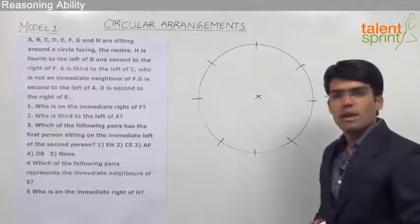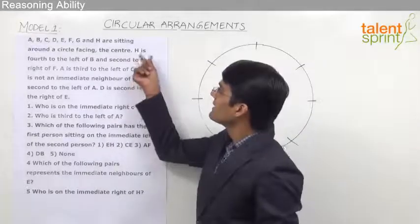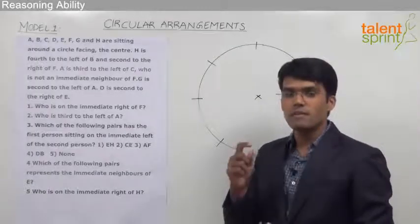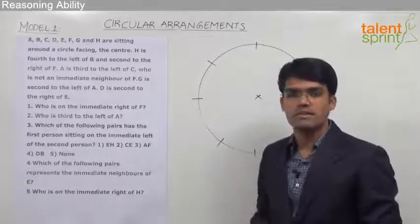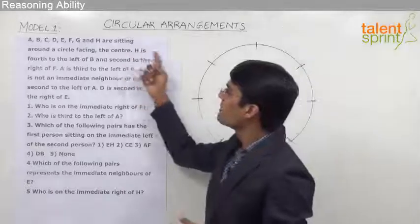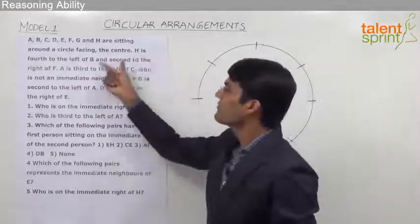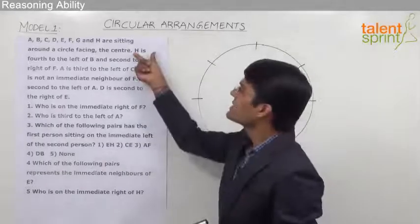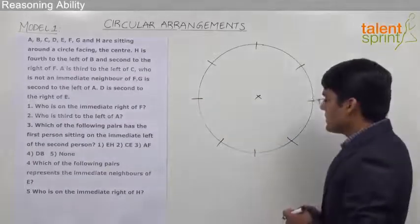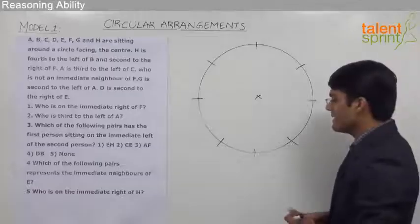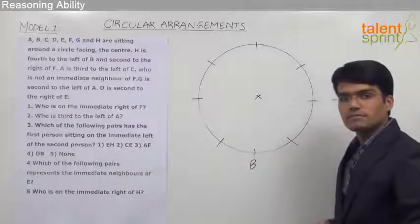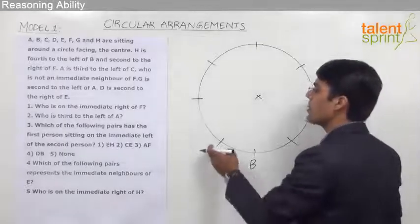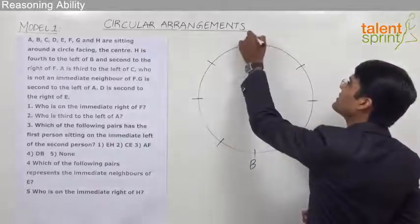Let us read the given statements one by one. The first statement is: H is fourth to the left of B and second to the right of F. Whenever the word 'and' is used, we refer to the first person in the second part of the statement. So we break this into: H is fourth to the left of B, and H is second to the right of F. Using the first part — let us assume B is at the bottom position. Left of B is towards our left, so fourth to the left of B is 1, 2, 3, 4. This position should be occupied by H.